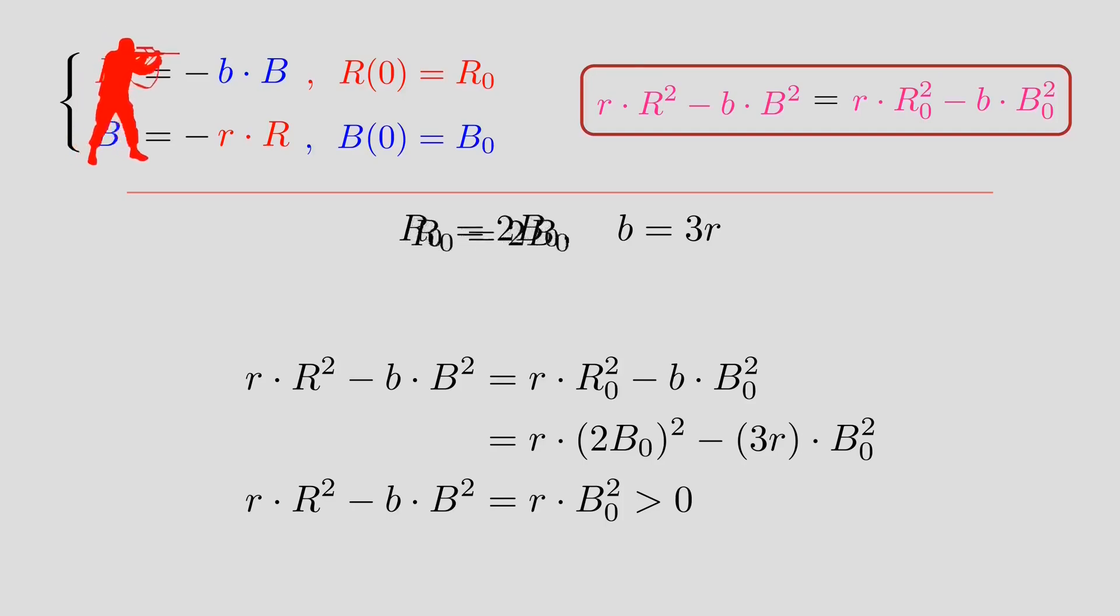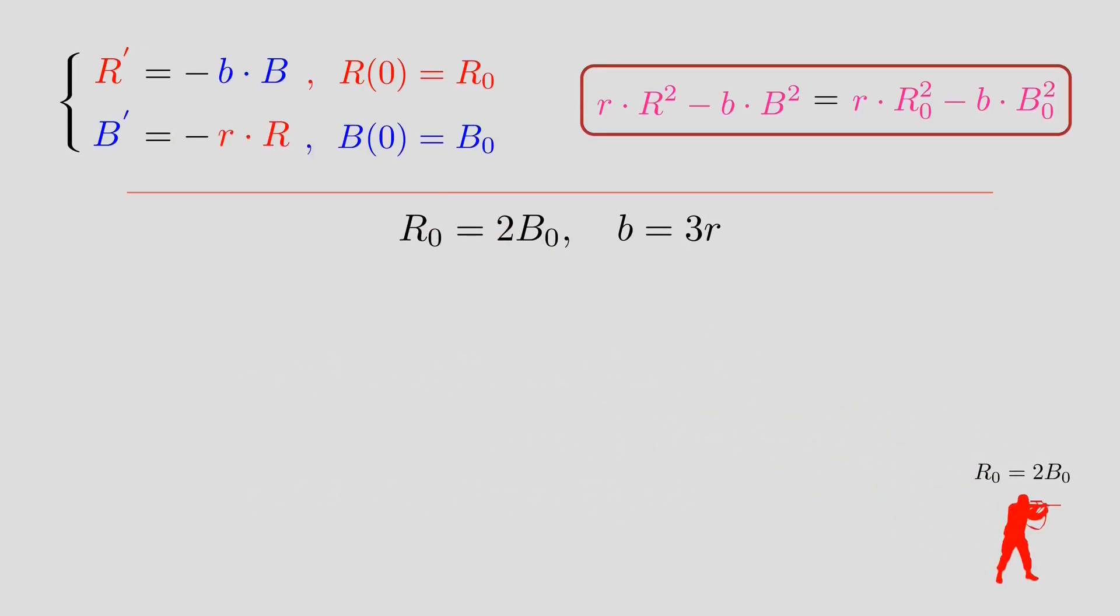So in this first case, it's the red army that wins. For the second case, we will leave everything as it is. But we will divide the red army into two equal parts. And there will be two consecutive battles. First is between the first half of the red army and the blue army. And if the blue army wins, there will be a second battle with the second half of the red army.